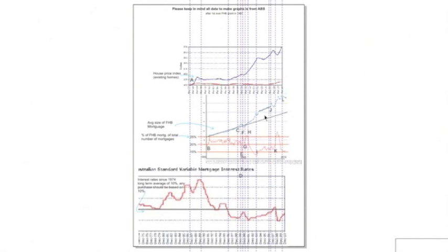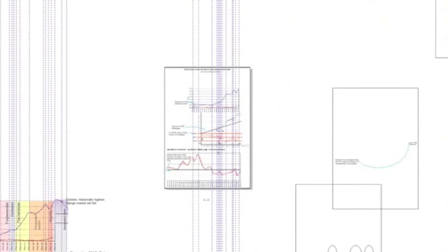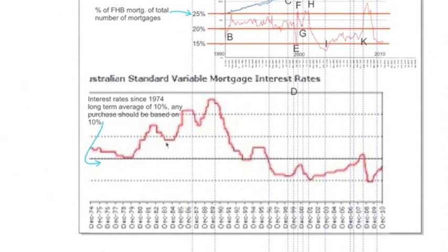In addition to the first two graphs, I've also added two more graphs from the Australian Bureau of Statistics. The first one is Australia's House Price Index — the relative value of houses in Australia from 1987 to 2010. And down the bottom is the interest rate changes over that time.